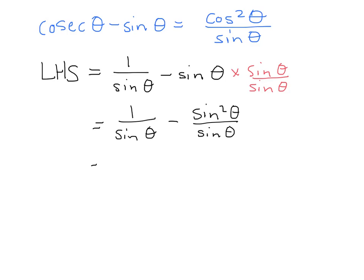And we can turn this into a single fraction, 1 minus sine squared theta over sine theta. Now, we want to turn this 1 minus sine squared theta into a cos squared theta to make it match the right-hand side.